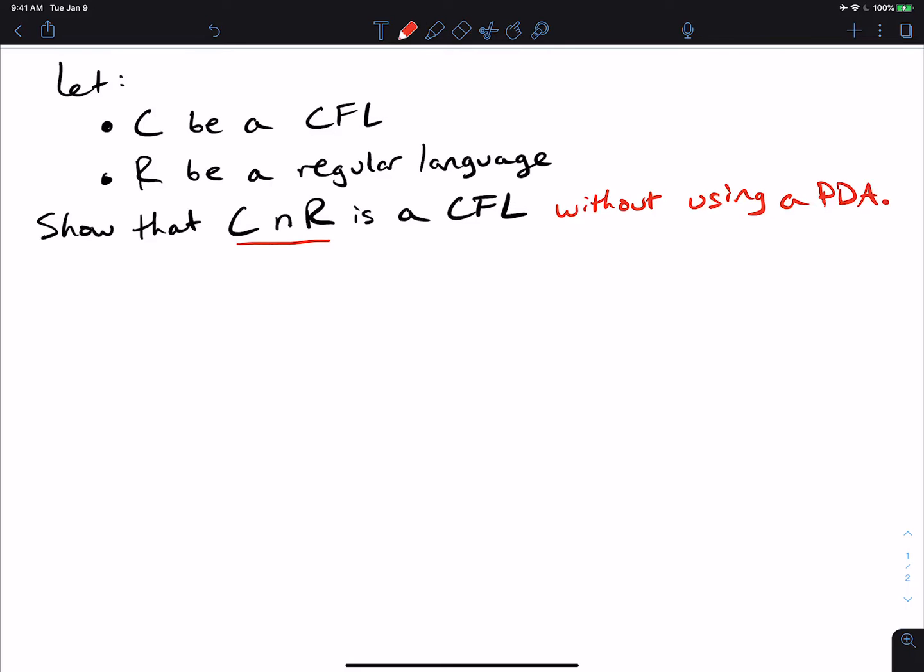Now, the usual method that most people appeal to is to use a PDA for the context-free language C and a DFA for the regular language R, and then doing a product-type construction, and we've done a video about that before, to give us a PDA for the intersection of the two. But here, what we're going to insist is that we don't use a PDA.